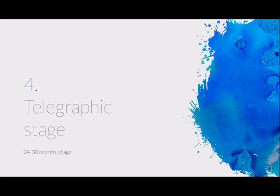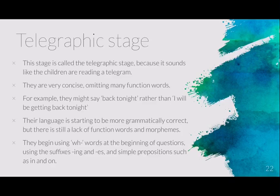The last stage is the telegraphic stage, which happens from around two years up to 30 months of age. It's called the telegraphic stage because children sound like they're reading a telegram — very concise, leaving out many function words. For example, they might say 'back tonight' rather than 'I will be coming back tonight.' Their language is starting to be more grammatically correct but there's still a lack of function words and morphemes, particularly inflectional morphemes.